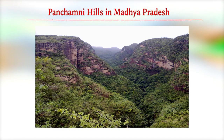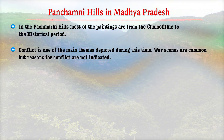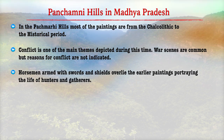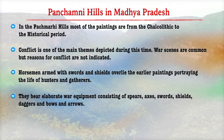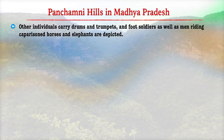Let me now take you to Panjmani Hills in Madhya Pradesh. Most of the paintings here are from the chalcolithic to the historical period. Conflict is one of the main themes depicted during this time. War scenes are common, but reasons for conflict are not indicated. Horsemen armed with swords and shields overlie earlier paintings portraying the life of hunters and gatherers. They wear elaborate war equipment consisting of spears, axes, swords, shields, daggers, and bows and arrows. Few individuals carry drums and trumpets, and foot soldiers as well as men riding horses and elephants are depicted.